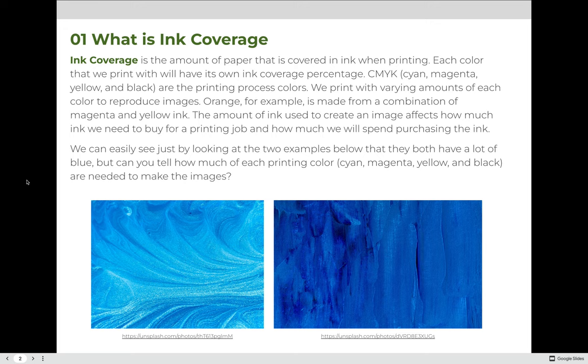We print with varying amounts of each color to reproduce images. Orange, for example, is made from a combination of magenta and yellow. The amount of ink used to create an image affects how much ink we will need to buy for a printing job, and ultimately how much we will spend purchasing that ink.